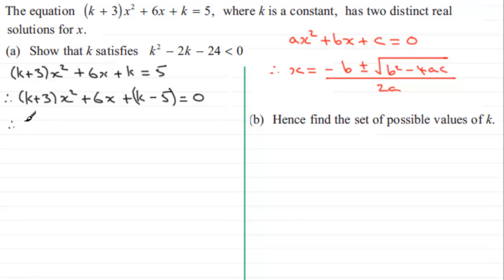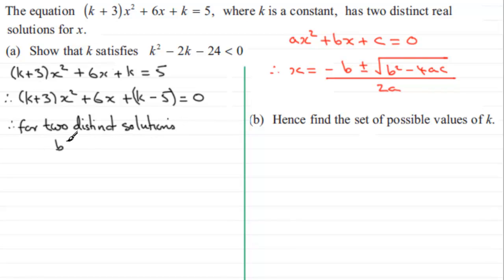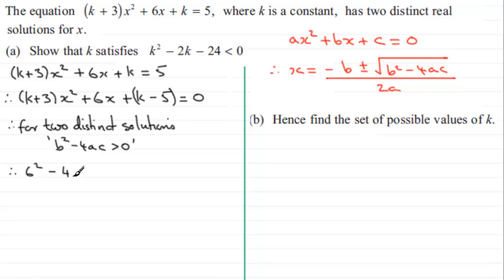So what I'm going to write here is: therefore, for two distinct solutions, we know that b squared minus 4ac, the discriminant, must be greater than zero. Now, b is the coefficient of x, which is plus 6. So we have 6 squared minus 4 multiplied by a, where a is the coefficient of x squared, which is k plus 3, and then times c, where c is k minus 5. All of that must be greater than 0.